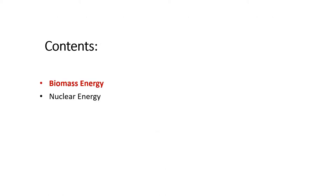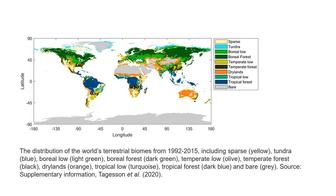The lecture is in two parts. In the first part, we shall discuss about biomass energy; in the second part, we shall discuss about nuclear energy. Here is a map showing distribution of the world's terrestrial biomes from 1992 to 2015, including sparse in yellow color, tundra in blue color, boreal low in light green color, boreal forest in dark green, temperate low in olive green, temperate forest in black color, drylands in orange color, tropical low in turquoise, tropical forest in blue color, and bare spaces in gray color.